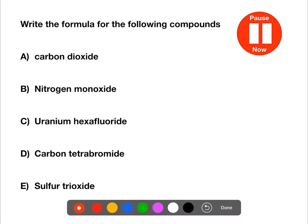So the steps that we use to write out the formula for prefix names are to first of all identify the symbols for the elements that are present. So here we have carbon and oxygen, and then insert the numbers into the name for each of the prefixes. So carbon doesn't have a prefix so we leave that as one, and dioxide is two oxygens.